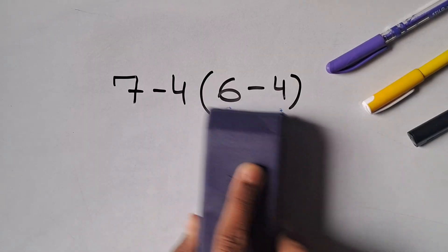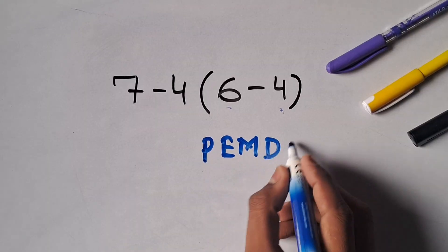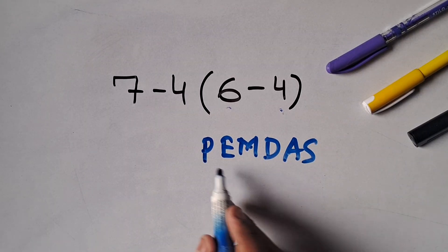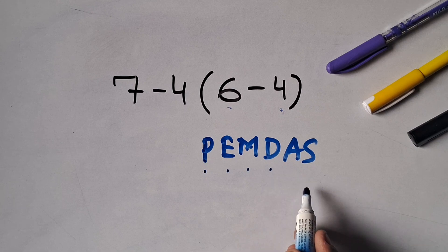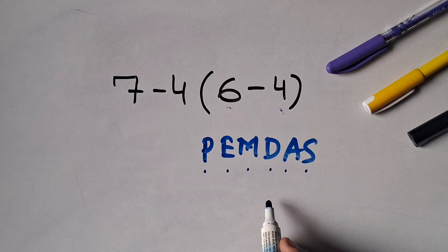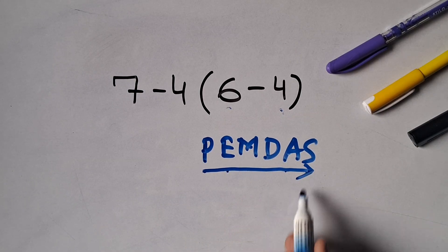...which is called PEMDAS, where P stands for parentheses, E stands for exponents, M and D stands for multiplication and division, and A and S stands for addition and subtraction. We have to solve from parentheses to subtraction, left to right.